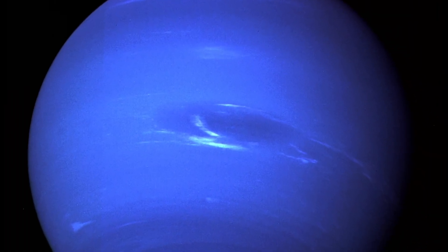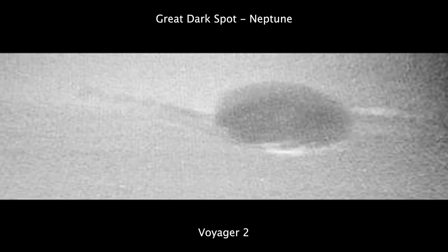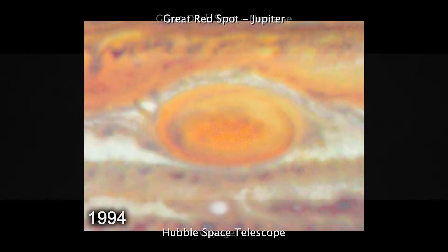The larger of the two storms Voyager 2 discovered on Neptune was called the Great Dark Spot because it looked very similar to the Great Red Spot on Jupiter.